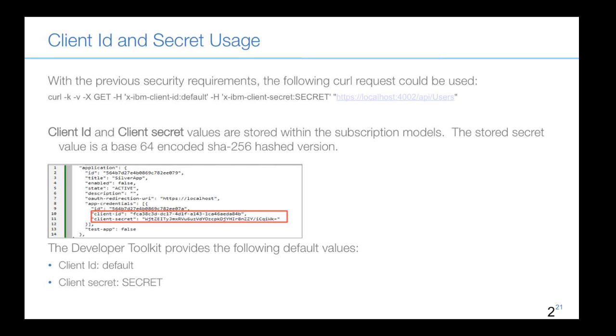Dan showed a curl command example for testing the security requirement with client ID and secret passed via headers using '-H'. The actual client ID and client secret values are stored in subscription models — the secret is stored as a base64-encoded SHA-256 hash. By default, the developer toolkit uses a client ID of 'default' and client secret of 'secret' (all caps), which is intentionally hard-coded to allow developers to test without needing real subscribers.